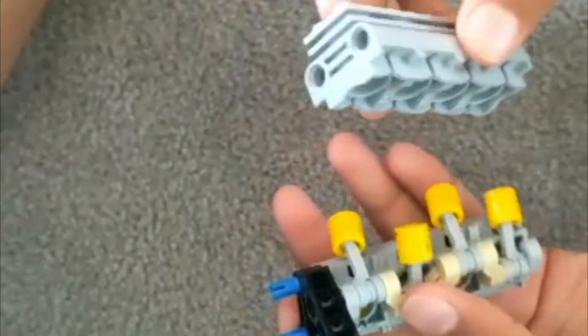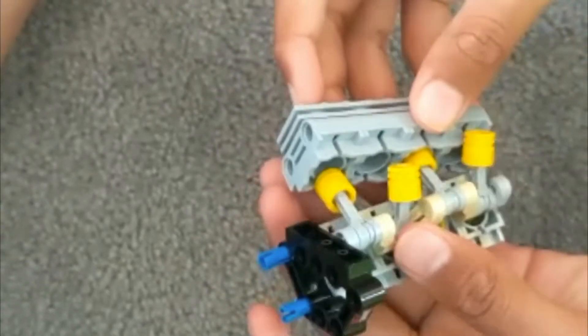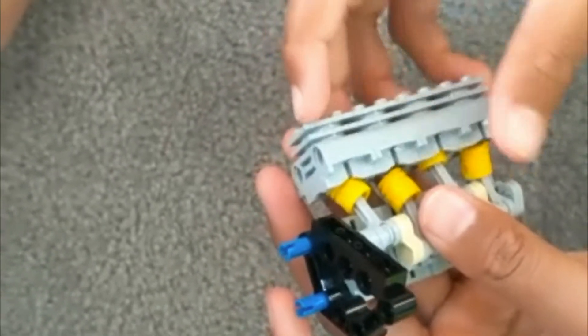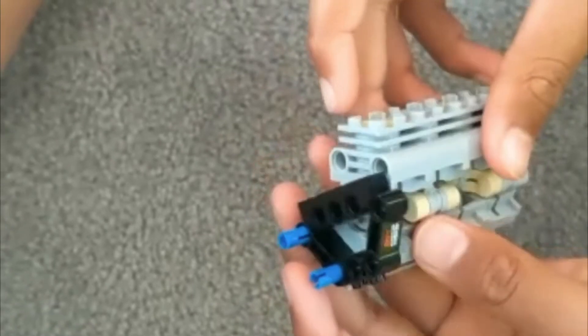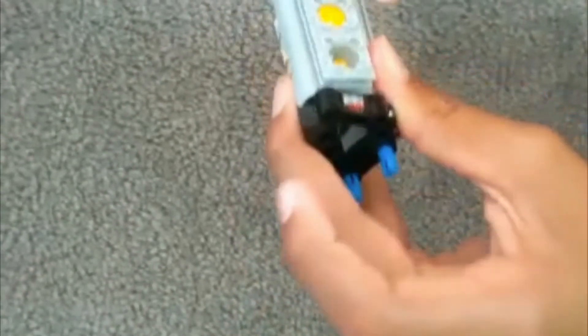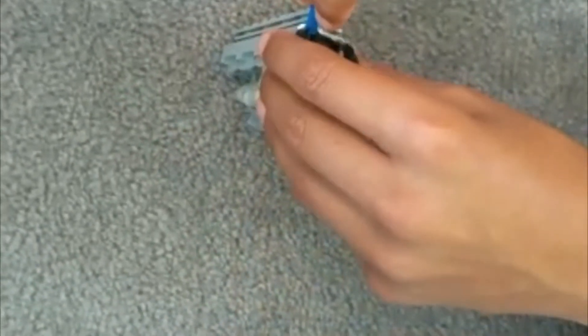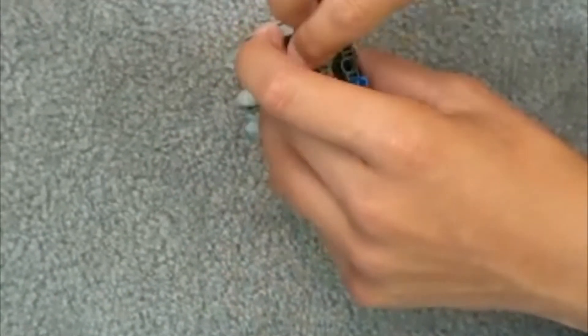Then you get the other piston holder and repeat the same thing. Now this may be quite hard to hold for young children, so adults, or friends, or siblings could help you. Now you hold the second part of the piston holder in place.